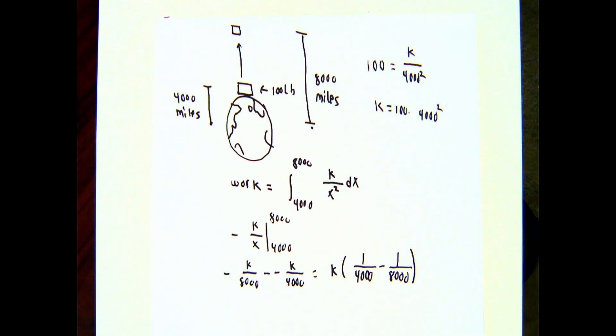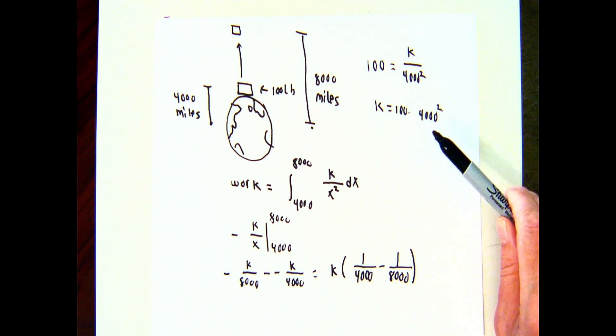An antiderivative for k over x squared is negative k over x. Being literal about it, I would write that, minus that, minus minus is plus, so I'll write the part with the 4,000 out front, subtract the k over 8,000, and factor the k out. Since we know what the k is, I just have to put the numbers into my calculator now.